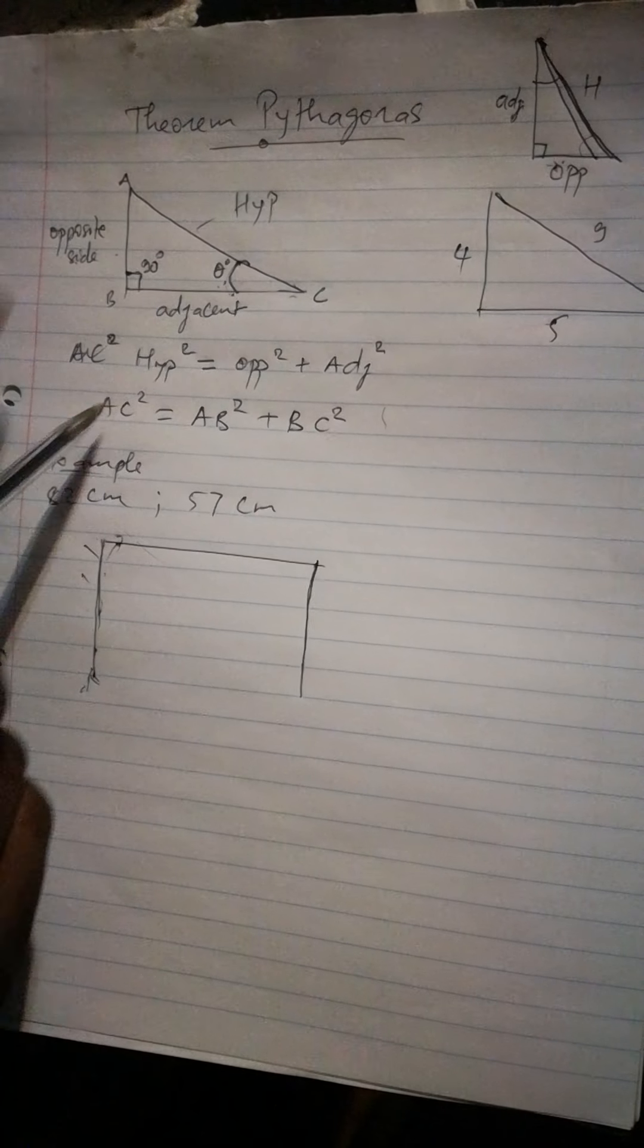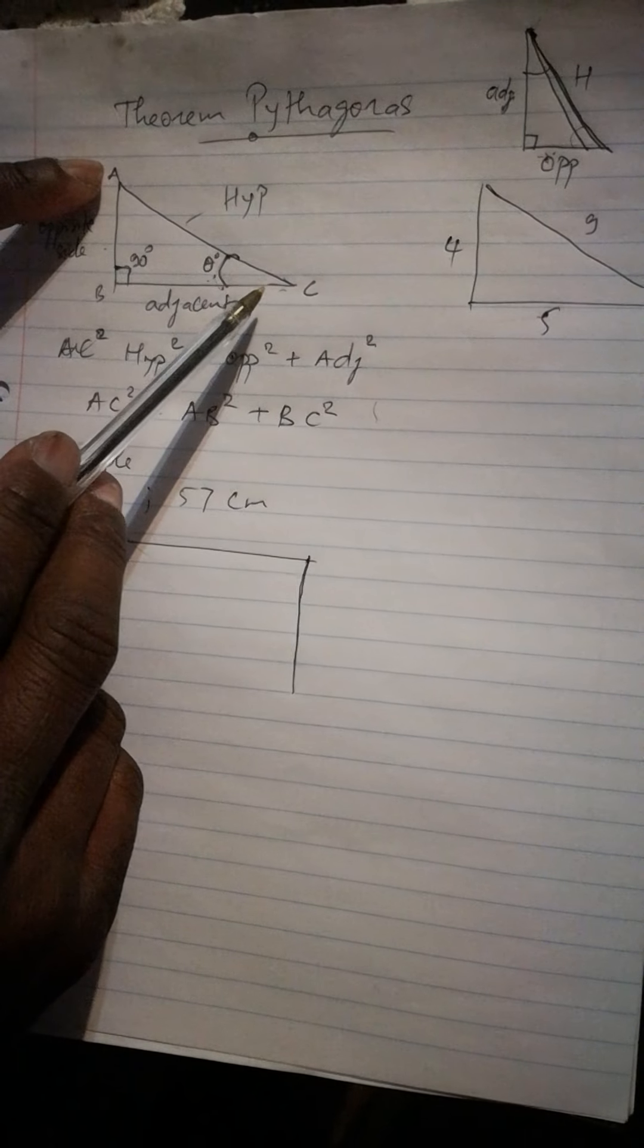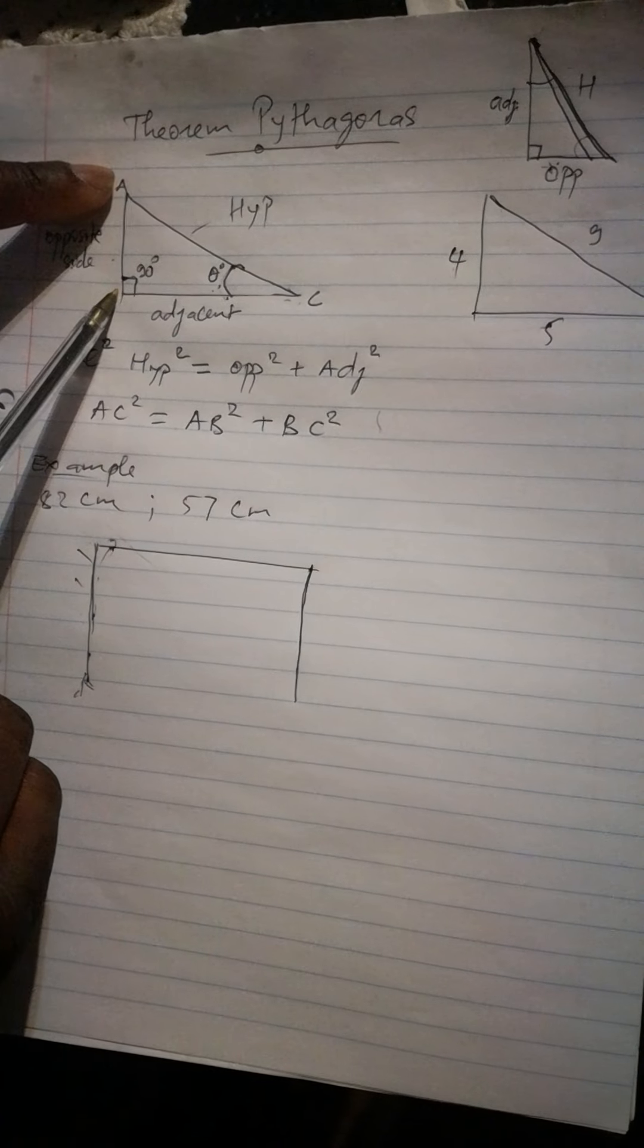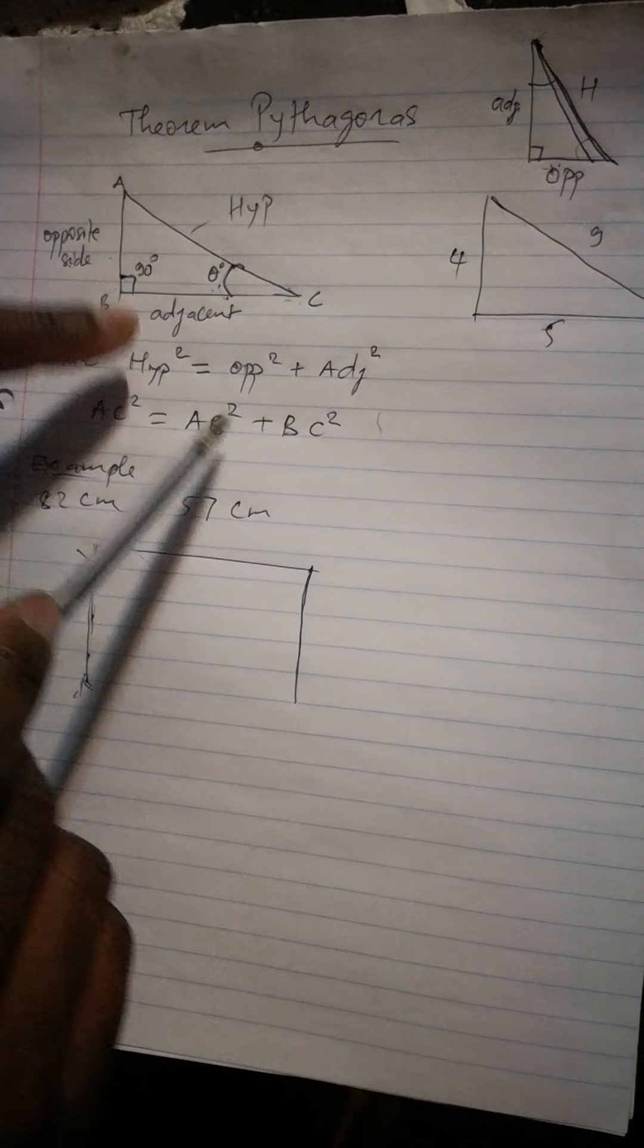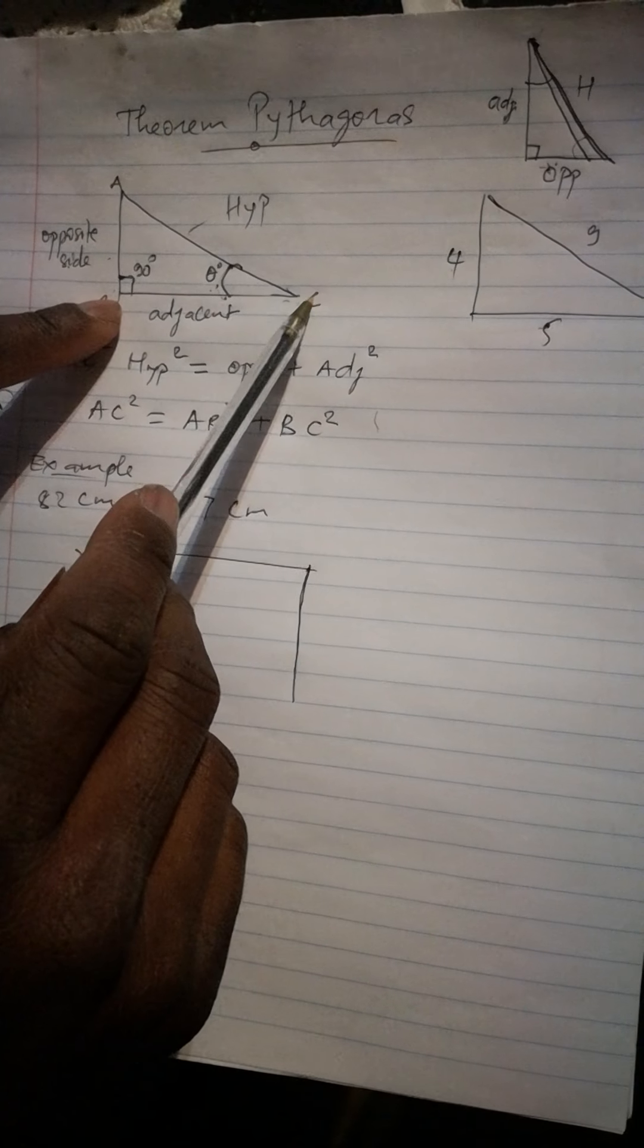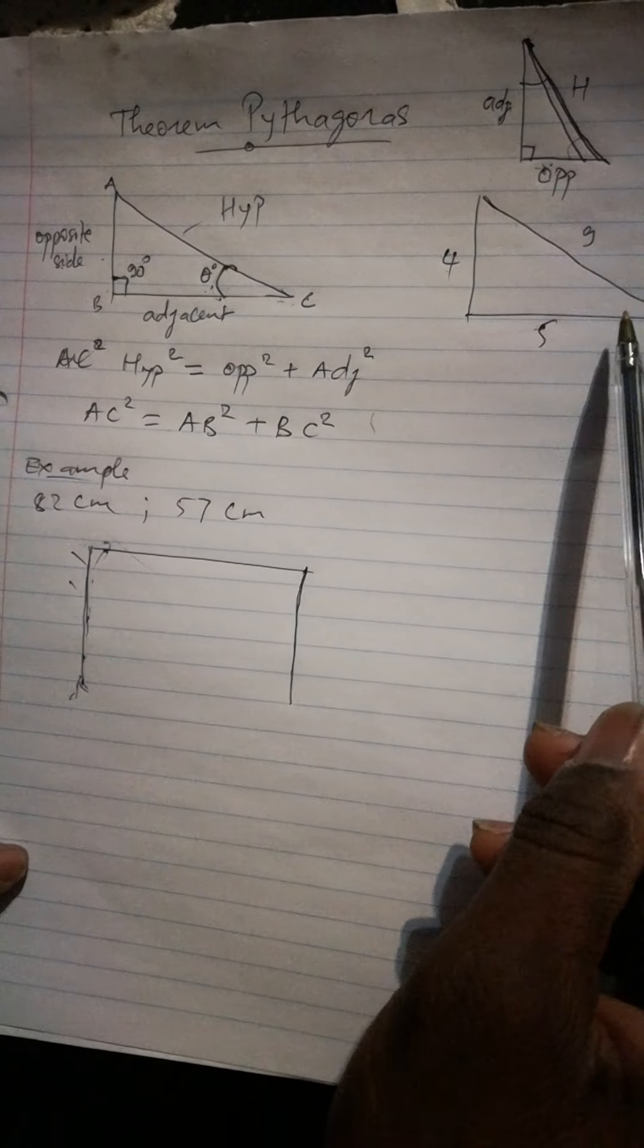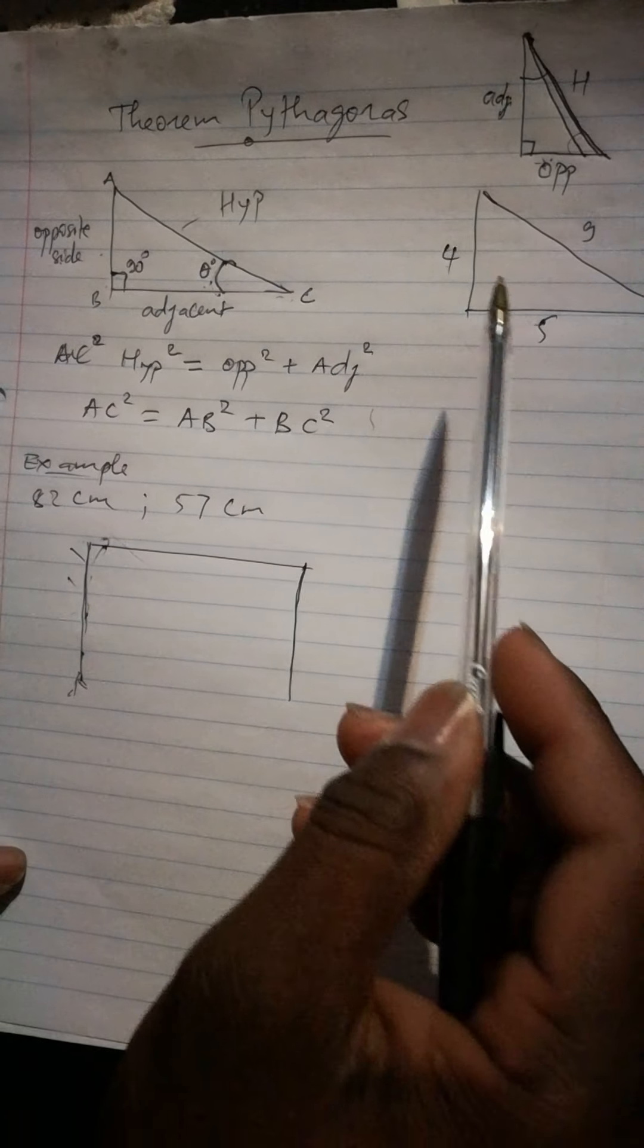And here as we can see our AC square equal to AB, this is our opposite side square plus our BC, this is our adjacent side. So for example, this one here, we have this measurement.